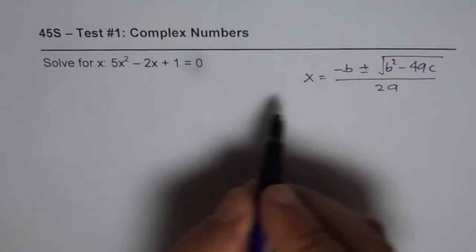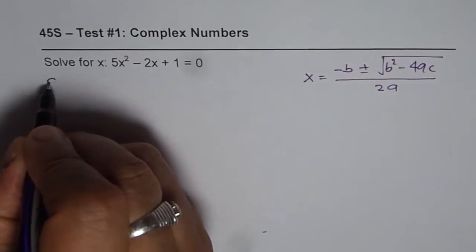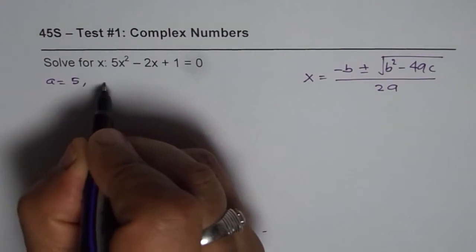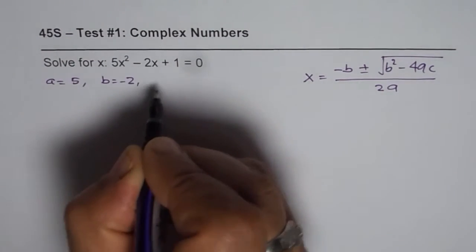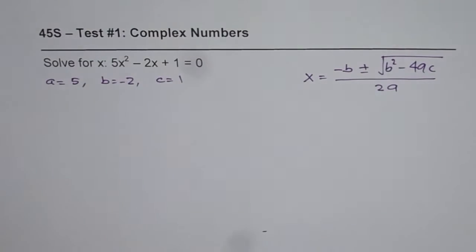Now in this equation, what is a? a = 5, b = -2, and c = 1.